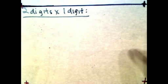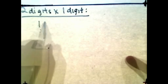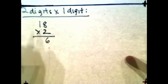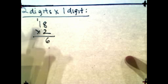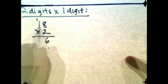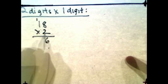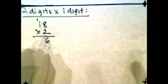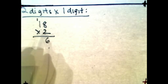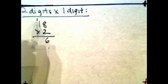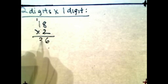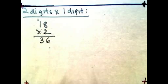Now let's move on to 2 digits times 1 digit. Let's say you have 18 times 2. 8 times 2 is 16. You carry the 1 over the 10th column. 1 times 2 is 2. Here's the thing: if this is the first time you're multiplying 2 digits to 1 digit, 1 times 2 is 2, then you have to add that 1 that was carried over. So that's 3. The answer is 36.